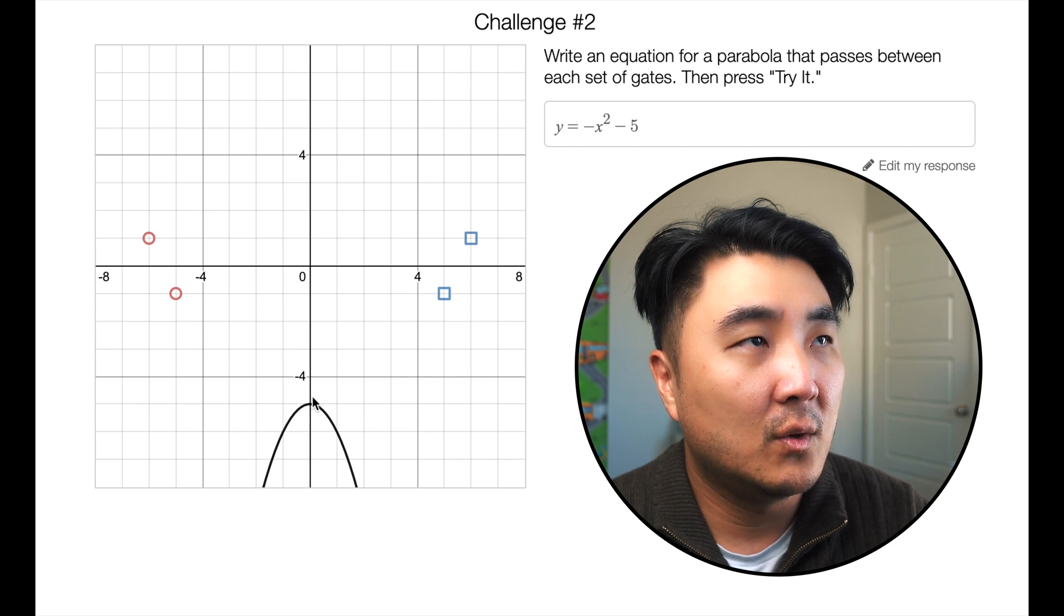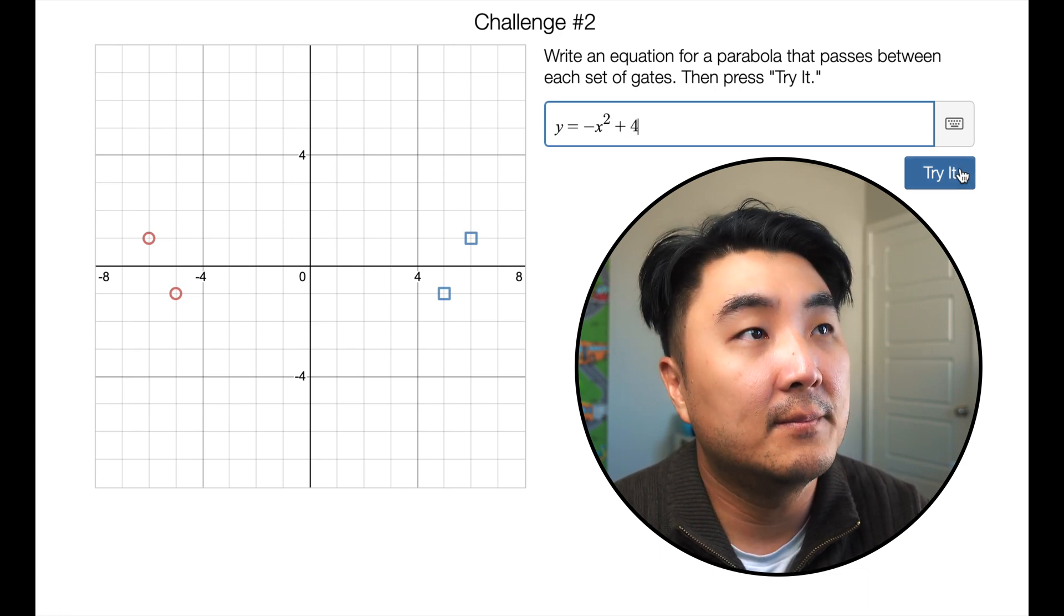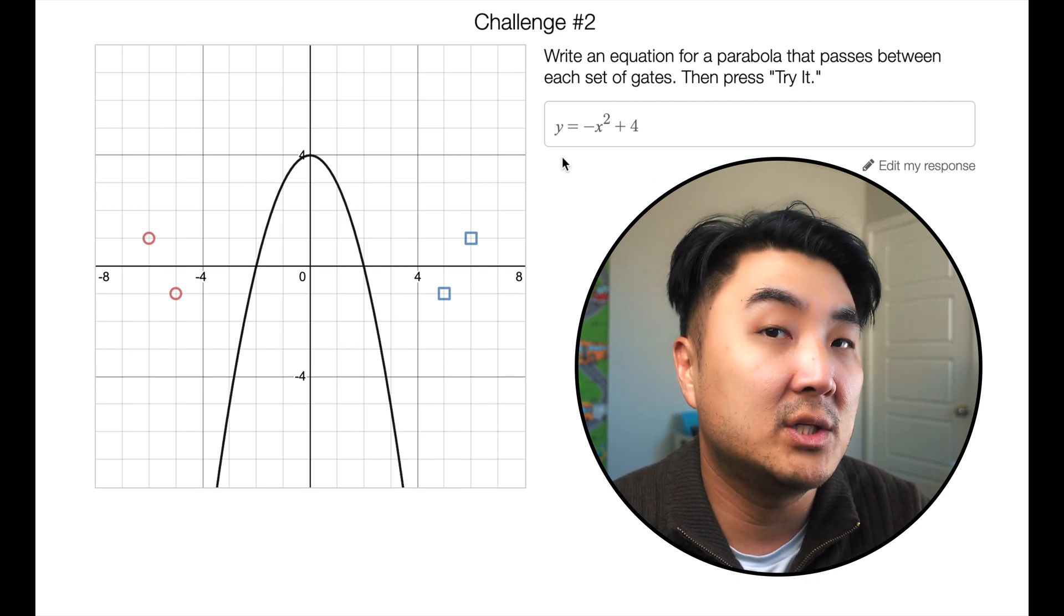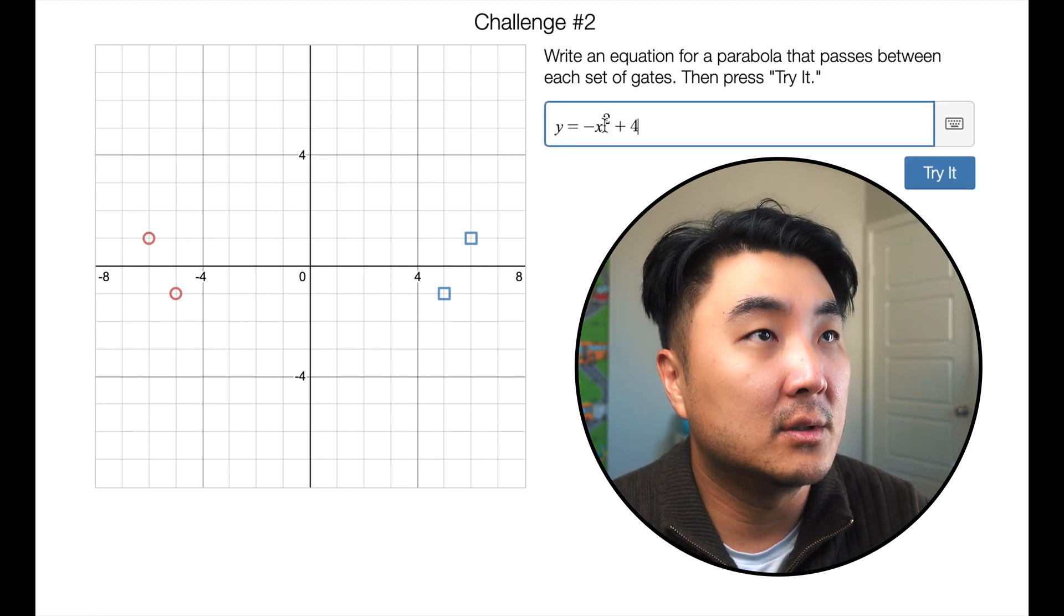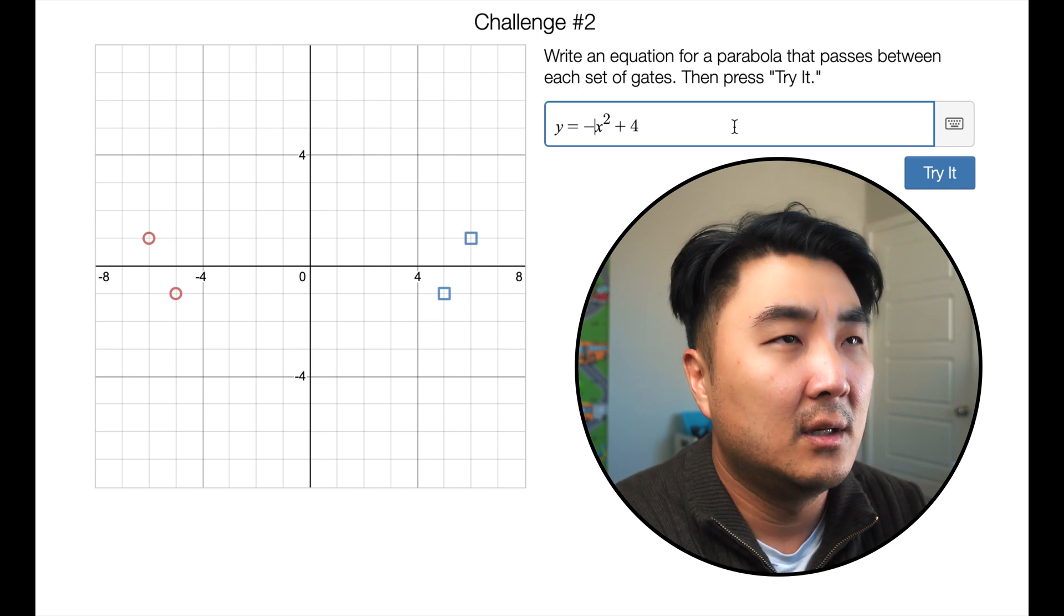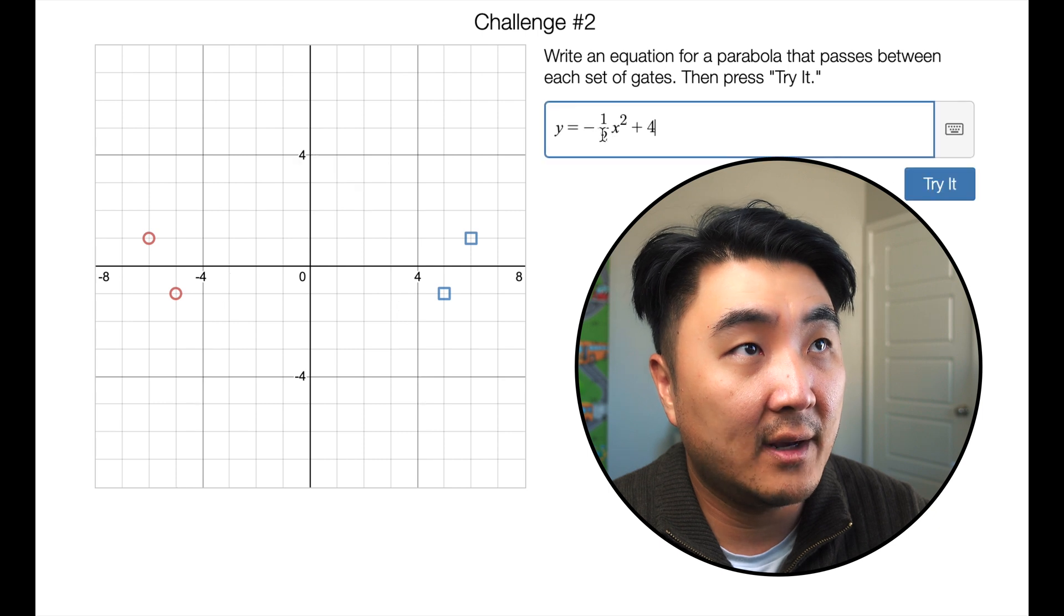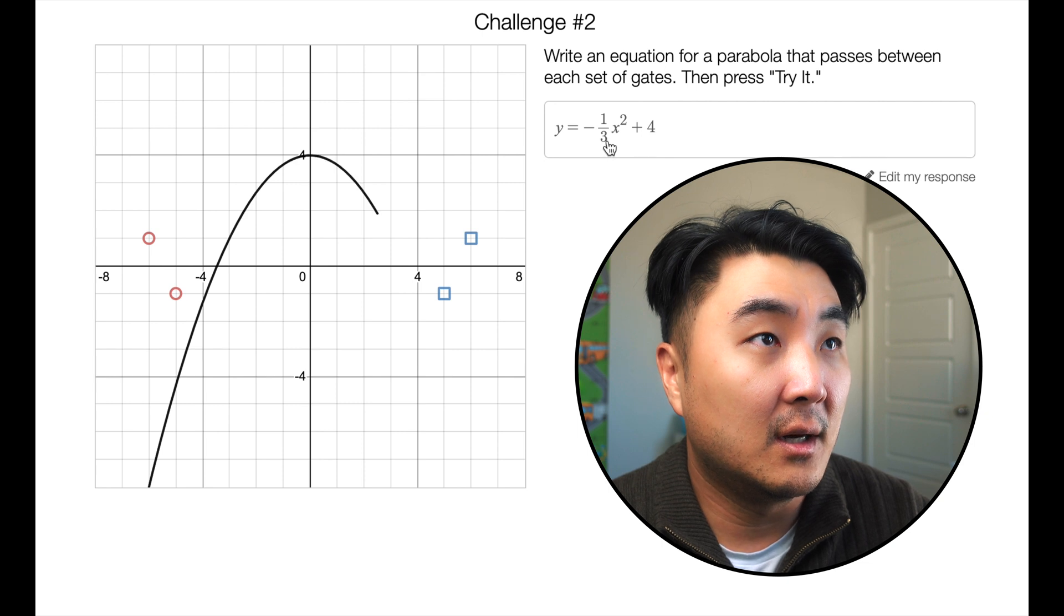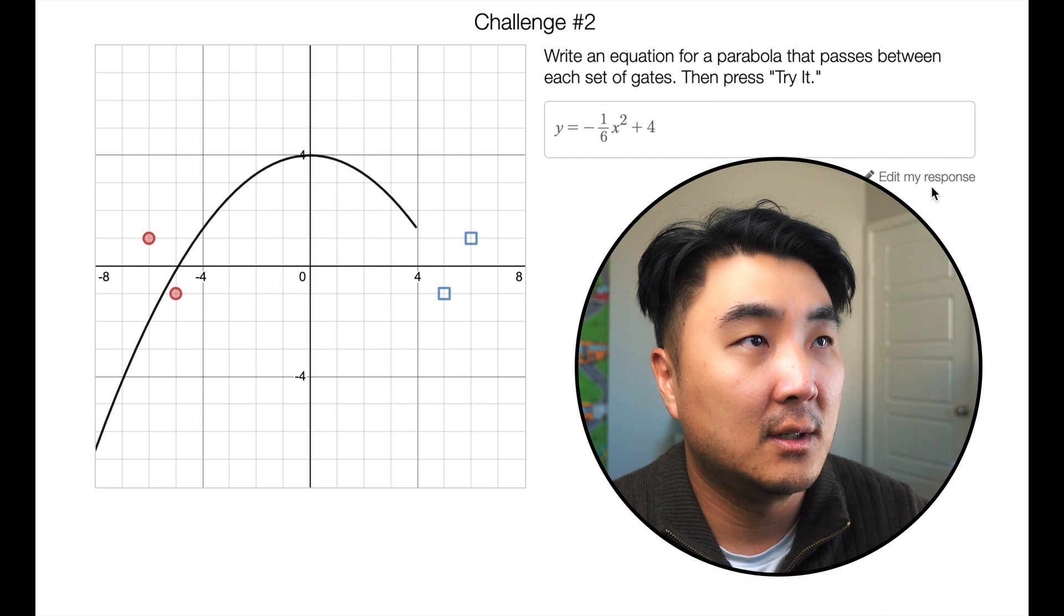We probably want this y-intercept to go a little bit higher, let's say four. So we want to change this negative five to be a positive four. Okay good, and then we want it to be wider. Remember how to get it wider? We got to change that a number to be less than one but greater than zero. So let's change it to one half, see what happens. Okay, so it needs to be wider than one half. Let's go to one third. Let's jump quite a bit higher. Let's go to one sixth. See how that works. Yep, that'll work.